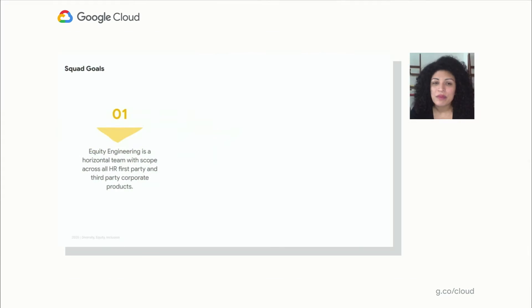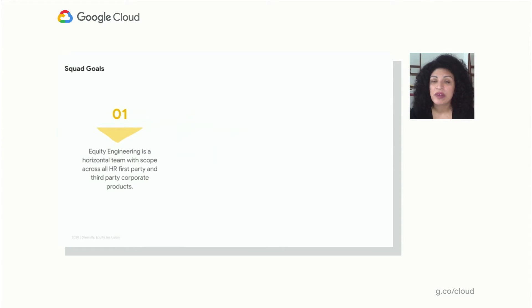We are beginning as a horizontal team with scope that focuses on HR first-party tools — tools built by Google for Google — and third-party tools used across the industry that we've incorporated at Google. Now you're probably wondering: why start with HR first? At Google, our hiring and professional development processes are very tailored to the way that Google does business.